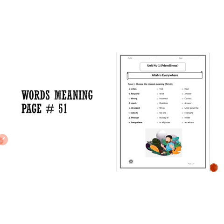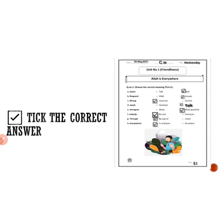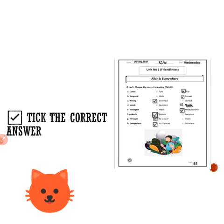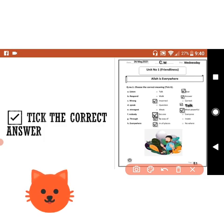Question number one is 'Choose the Correct Meaning.' You are given words here and two options ahead. You have to tick the option that has the correct meaning. First is 'listen.' Listen means talk or hear? What is the meaning of listen? Yes, it means 'hear' — to listen to something.